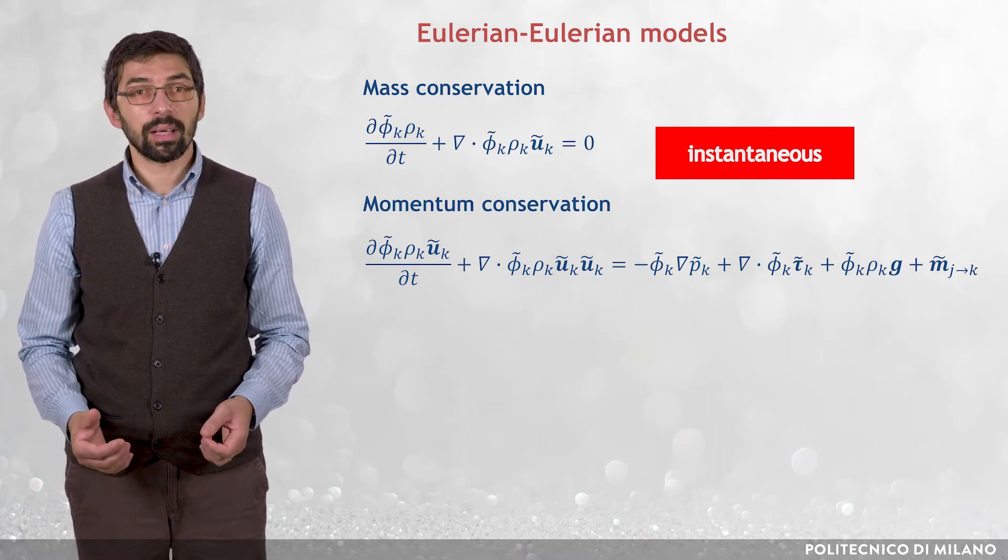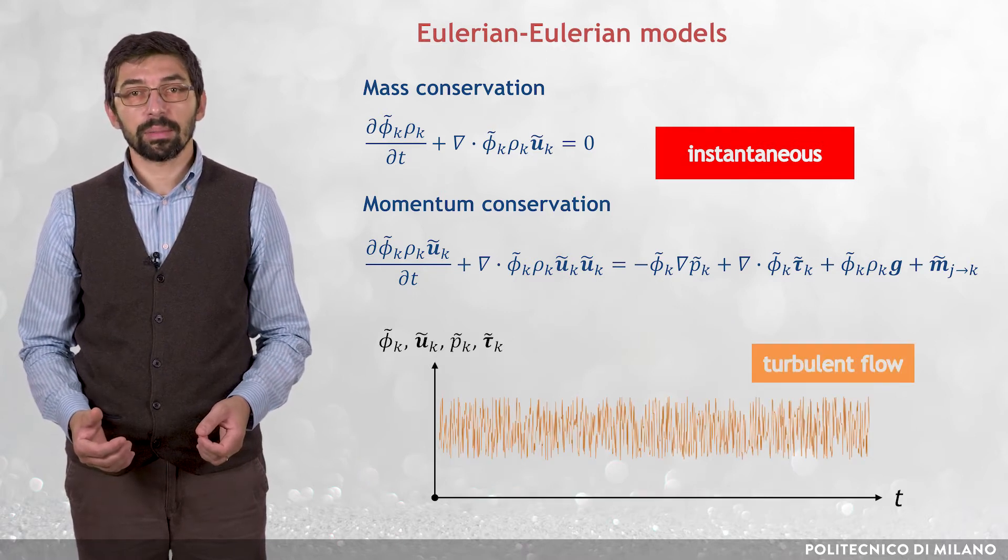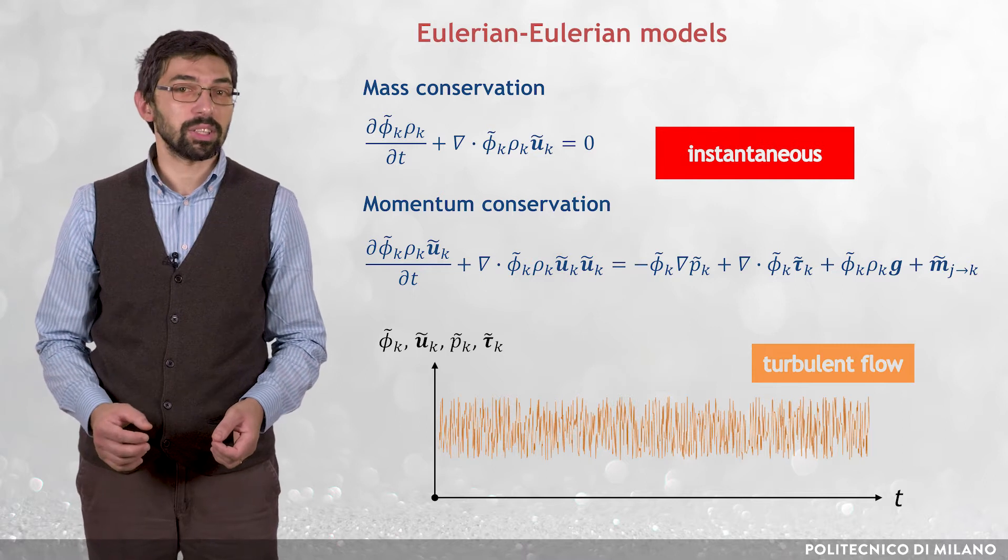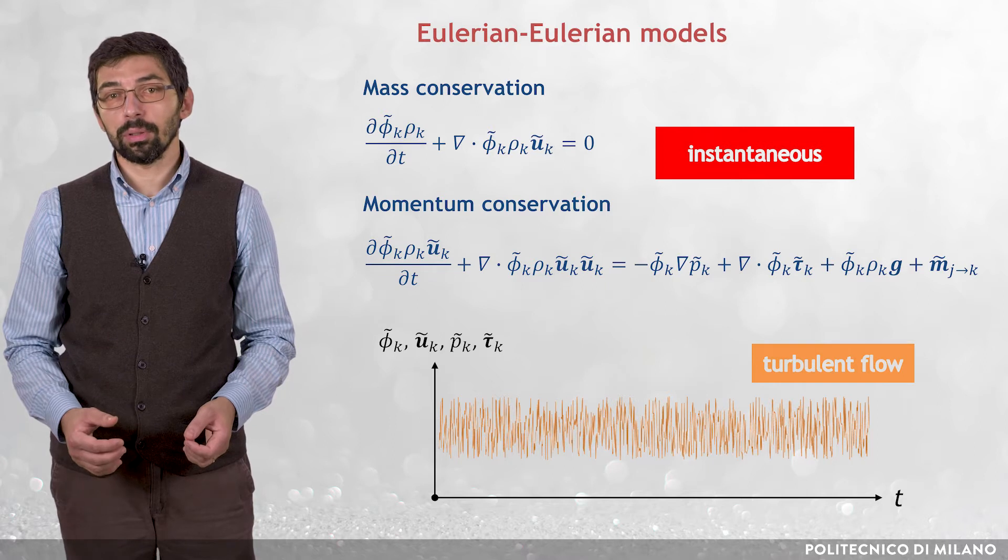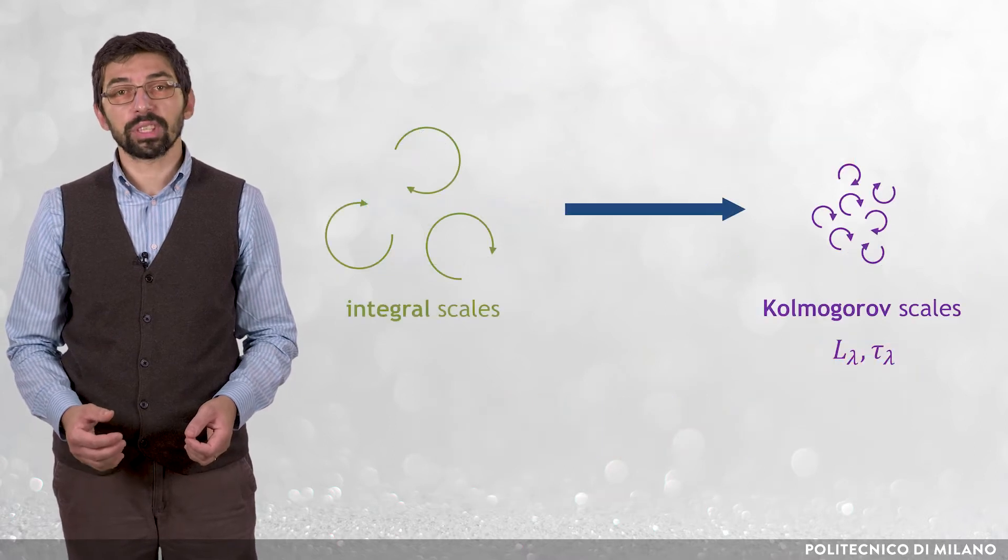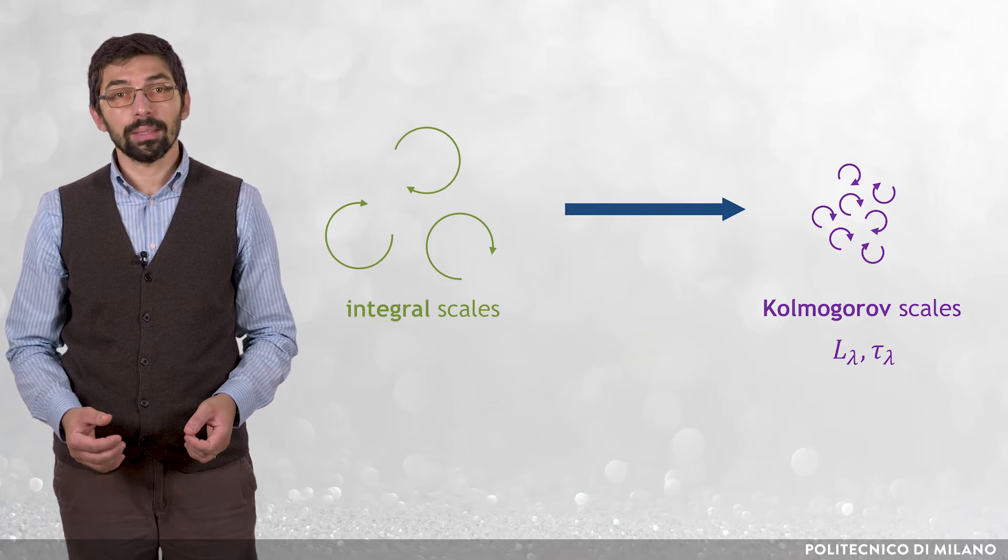As a consequence, the direct solution of the Eulerian-Eulerian equations requires reproducing even the smallest space and time scales of turbulence, which, when referring to a single phase flow, we called Kolmogorov scales and indicated as L small lambda and tau small lambda.